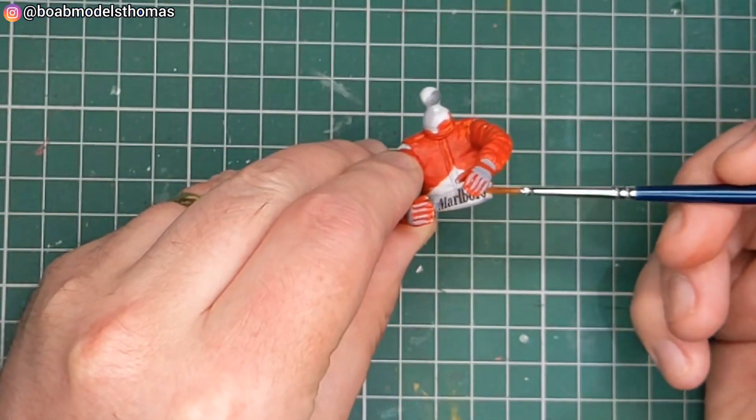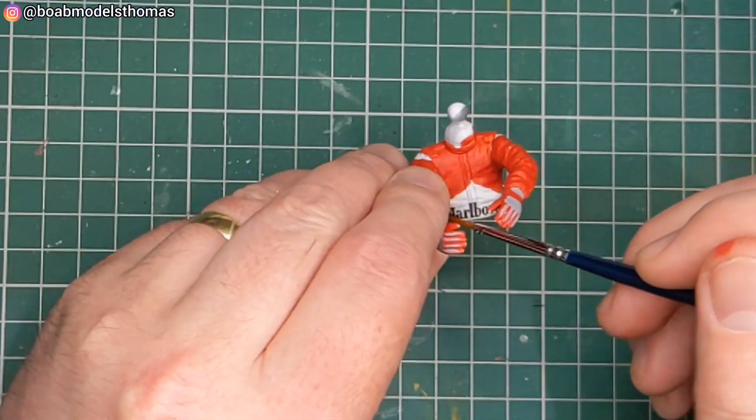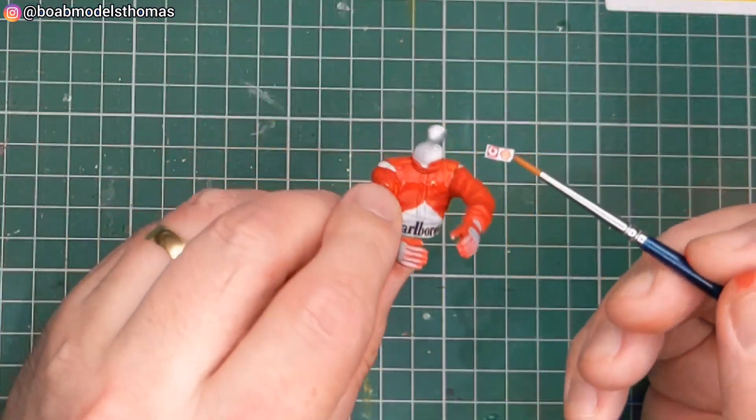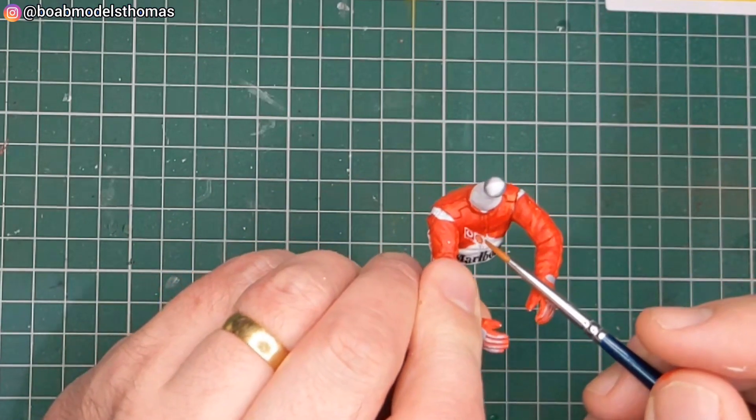Firstly I used this Marlboro logo which I printed onto transparent decal paper. The L and the B in the middle go along the seam in the middle of the jacket.